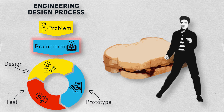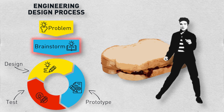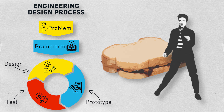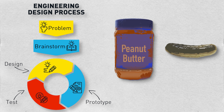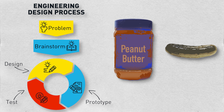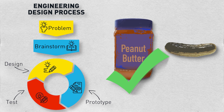Now it's time to design our solution — or in this case, make our recipe for the new PB&J being tested. When we design, we look at several solutions and then choose the best one to test.